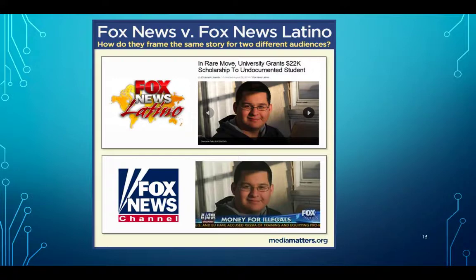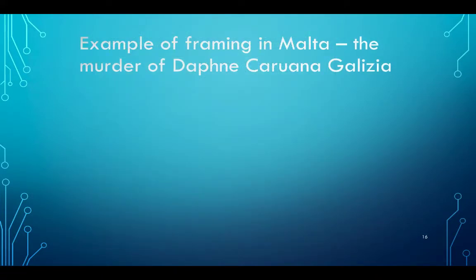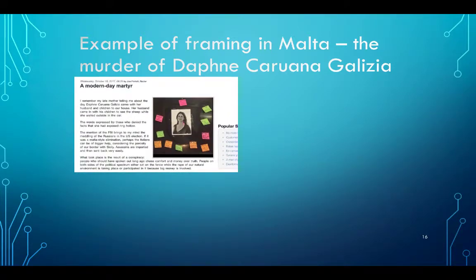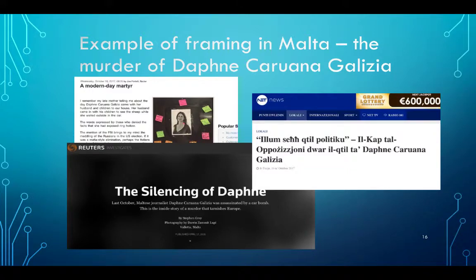This is an interesting example of framing: Fox News framed the same story differently to two different audiences. At the top, the news as framed for the Latino audience highlights the fact that a Latino student has been helped. However, in the mainstream Fox News version, the highlight is not that the student is being helped but rather that money is being spent on illegal immigrants. We also have framing examples from Malta taken from the murder of Daphne Caruana Galizia — she was labeled a modern-day martyr, politically it was described as a political murder, and internationally Reuters emphasized the silencing of an investigative journalist.